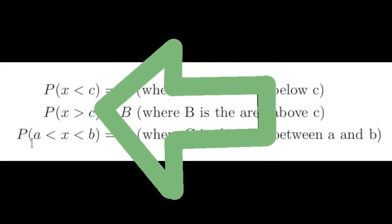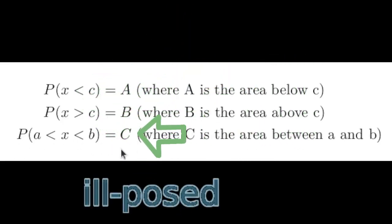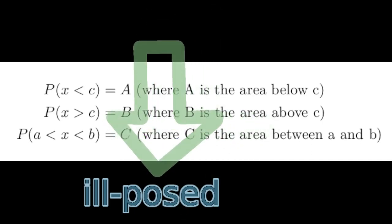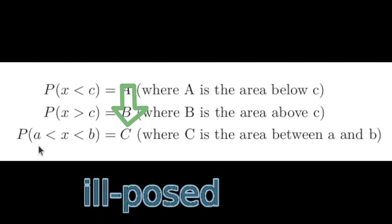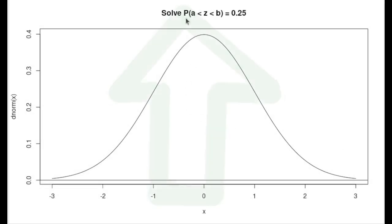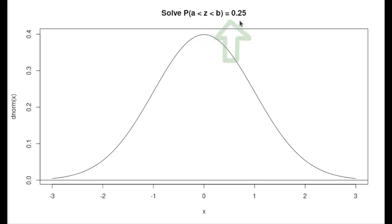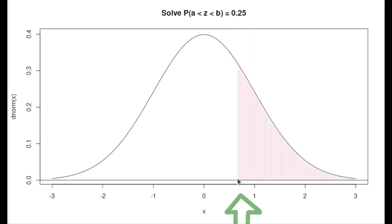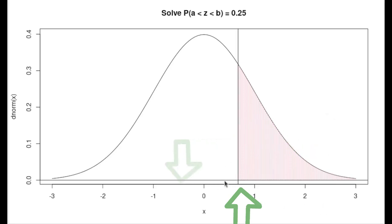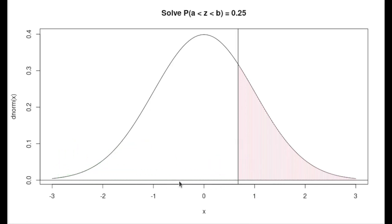The inverse problem for the third probability equation is ill-posed — meaning that if the area c is known, there are an infinite number of choices of a and b that make the equation true. For example, suppose we wanted to solve the probability that z is between a and b equal to 25% in a standard normal distribution. It's easy to find a value so that 25% of the population is above it, meaning any value below that amount could serve as an endpoint giving 25% of the population between a and b.